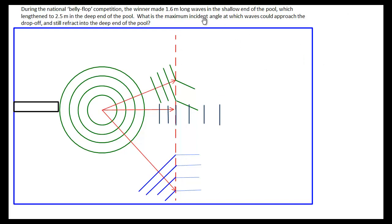Now I want to start by writing down our given information. Our given information says the winner makes 1.6 meter long waves in the shallow end. So that's lambda i. And those waves get larger as they speed up in the deep end of the pool. And they stretch to 2.5 meters. So that's lambda r in the deep end. Now it wants to know the maximum incident angle, also known as the critical angle, at which waves could approach the drop-off and still refract. Remember, that's the definition of the critical angle. So we'll worry about that in a second. But we're looking at comparing wavelengths and angles. So the version of the equation we need to use involves wavelengths and angles. So let's write down our given information and the equation first.